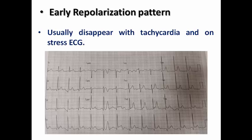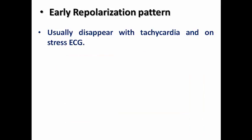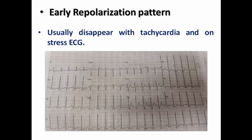However, the early repolarization pattern usually disappears with tachycardia. In this example of a patient undergoing a treadmill test, his resting ECG showed early repolarization pattern prominent in V3, V4, V5, V6, and inferior leads. With tachycardia as he started the treadmill exercise, the heart rate accelerated and the early repolarization pattern disappeared. At peak exercise, it nearly disappeared completely. So in serial ECGs it remains stable, but with acceleration of heart rate it usually disappears.